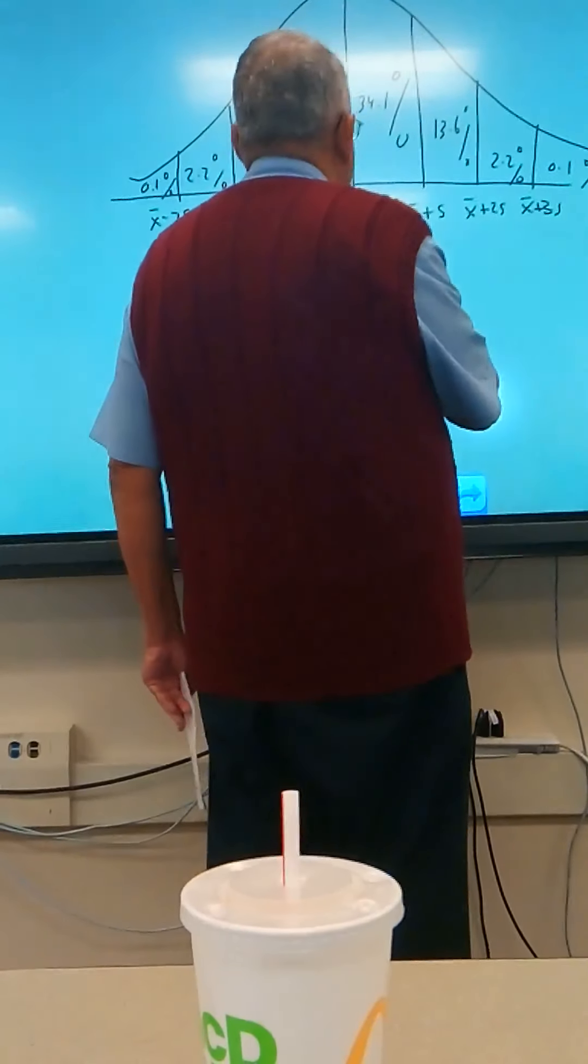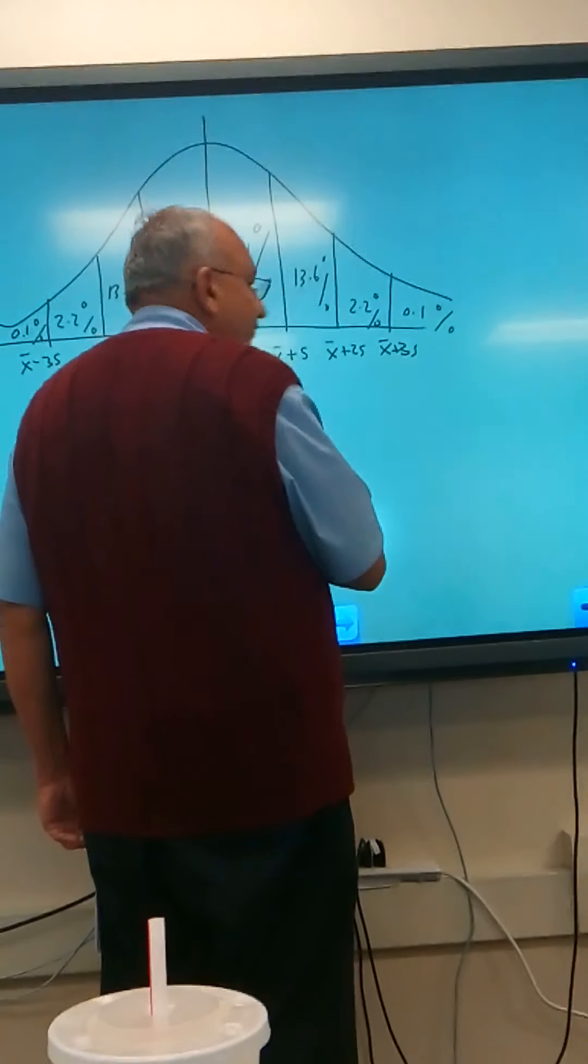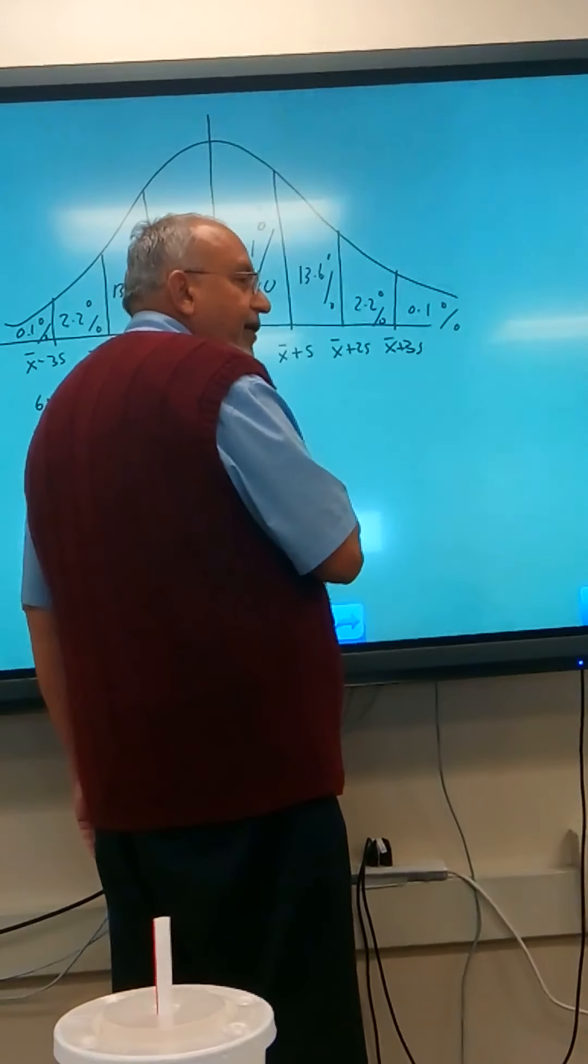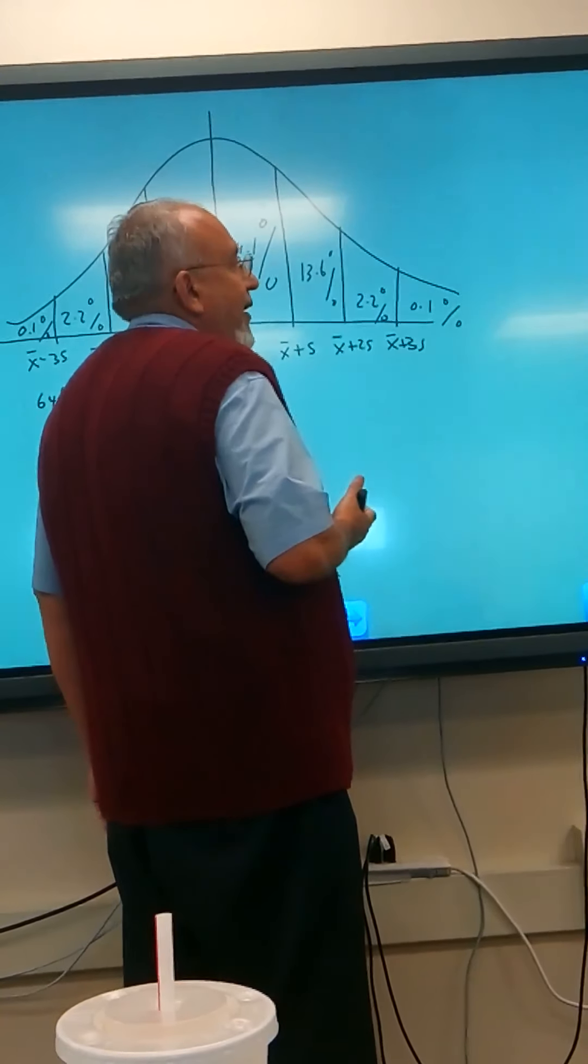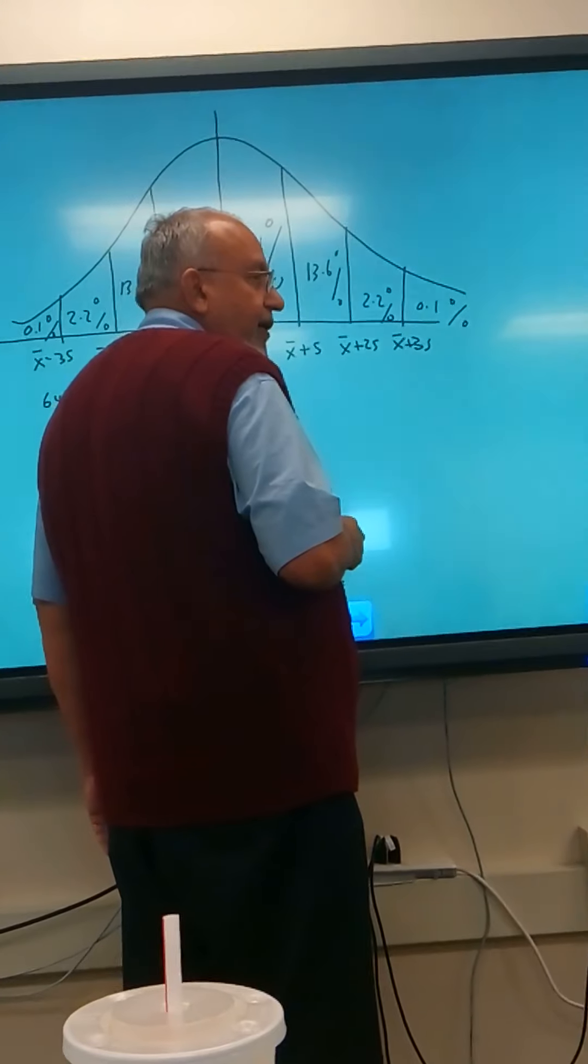But I got lost in that part of it. If the number was like 55, then the answer would be 0, right? Because there was a question on the homework and the number was like way off the charts. Like the z was 7.